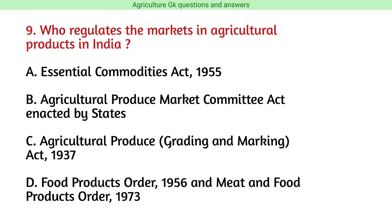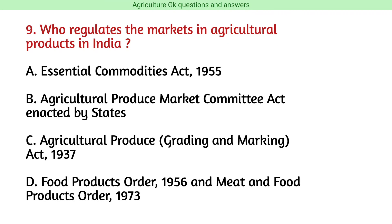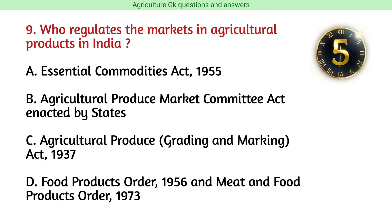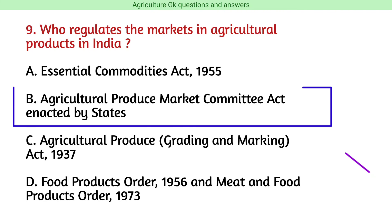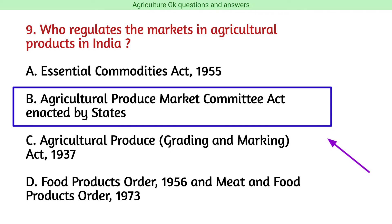Question number 9. Who regulates the markets in agricultural products in India? The correct answer is option B, i.e., Agricultural Produce Market Committee Act enacted by states.